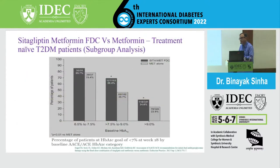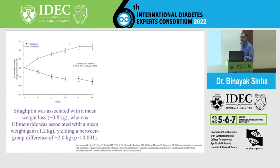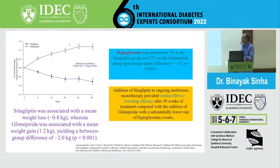In the 7.5 to 8.5% HbA1c group — the most common group — there is a statistically strongly significant HbA1c reduction with sitagliptin and metformin. Compared to a competitor like glimepiride, there is a similar HbA1c reduction throughout, but with the added advantage of weight reduction of about 2 kg compared to the sulfonylurea and 0.8 kg compared to placebo. There is also no additional risk of hypoglycemia. Metformin followed by sitagliptin seems to fit the bill beautifully.